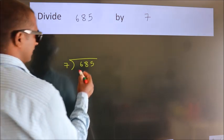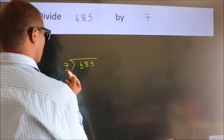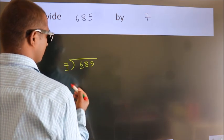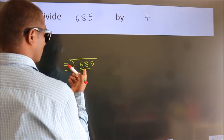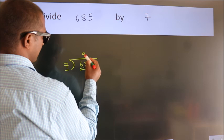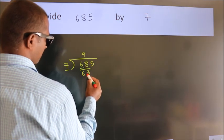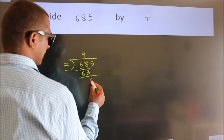Here we have 6, here 7. 6 is smaller than 7, so we should take 2 numbers: 68. A number close to 68 in the 7 table is 7 nines, 63. Now we should subtract. We get 5.